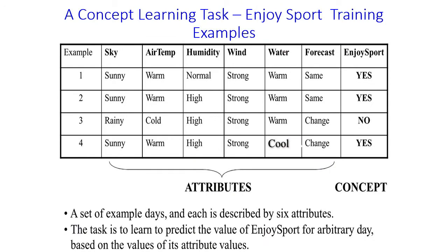Consider the concept learning task: enjoy sport. Look at the table — it consists of four training examples: row one, row two, row three, and row four. The column names represent attribute names and the corresponding values are attribute values. The last column represents the concept. Each example day is described by six attributes: sky, air temperature, humidity, wind, water, and forecast. The task is to learn to predict the value of enjoy sport for an arbitrary day based on its attribute values.